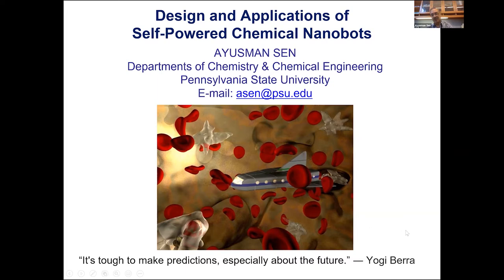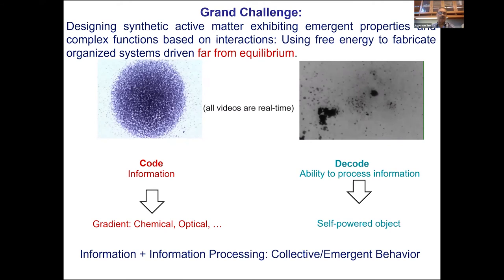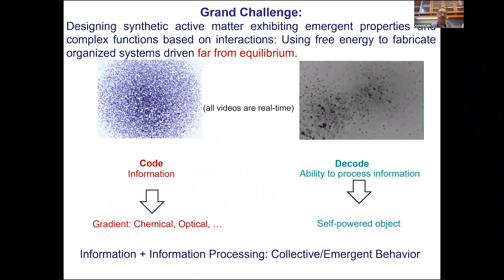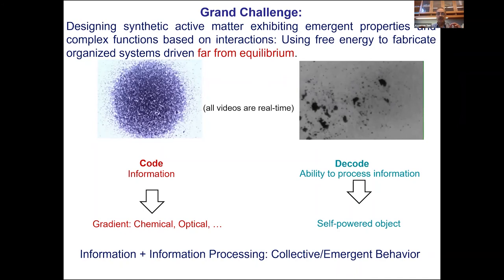This is sort of our vision—human beings as robots shrunk down in a spaceship going through the bloodstream, repairing stuff in your body. What we are trying to do is design synthetic active matter that exhibits emergent properties through functions. This involves interactions with each other and with the environment, requiring the use of free energy—systems driven far out of equilibrium.